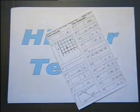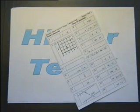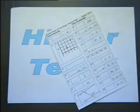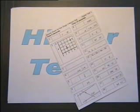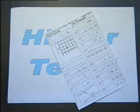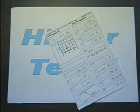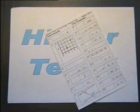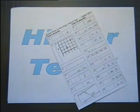Number 9. The plan of a school is drawn to a scale of 1 centimetre to 5 metres. The main hall on the plan is 9 centimetres long. How long is the real hall? Number 10. Write down a number that is a multiple of 4 and a multiple of 6.